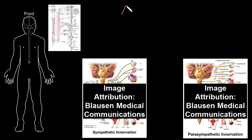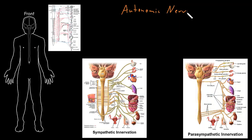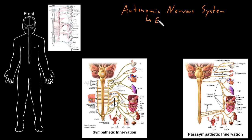In this video, I want to introduce the autonomic nervous system, which is part of the overall nervous system. This is a functional division of the nervous system, not a structural division like the central nervous system and the peripheral nervous system. The autonomic nervous system consists of efferent neurons in the peripheral nervous system that do specific jobs.